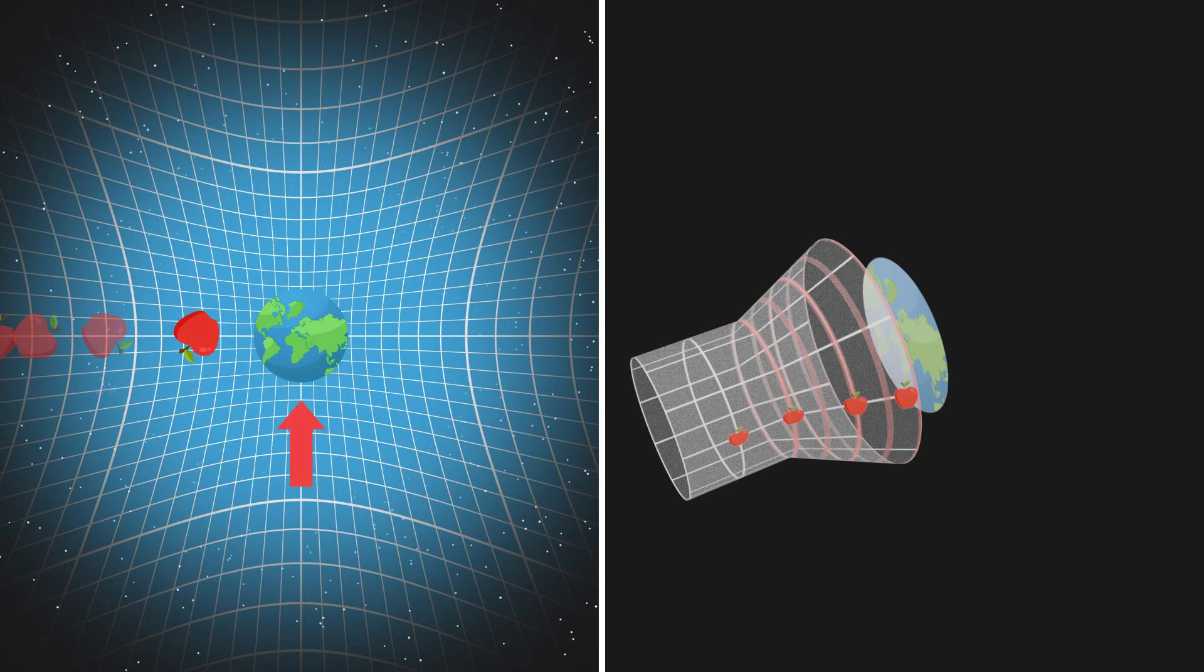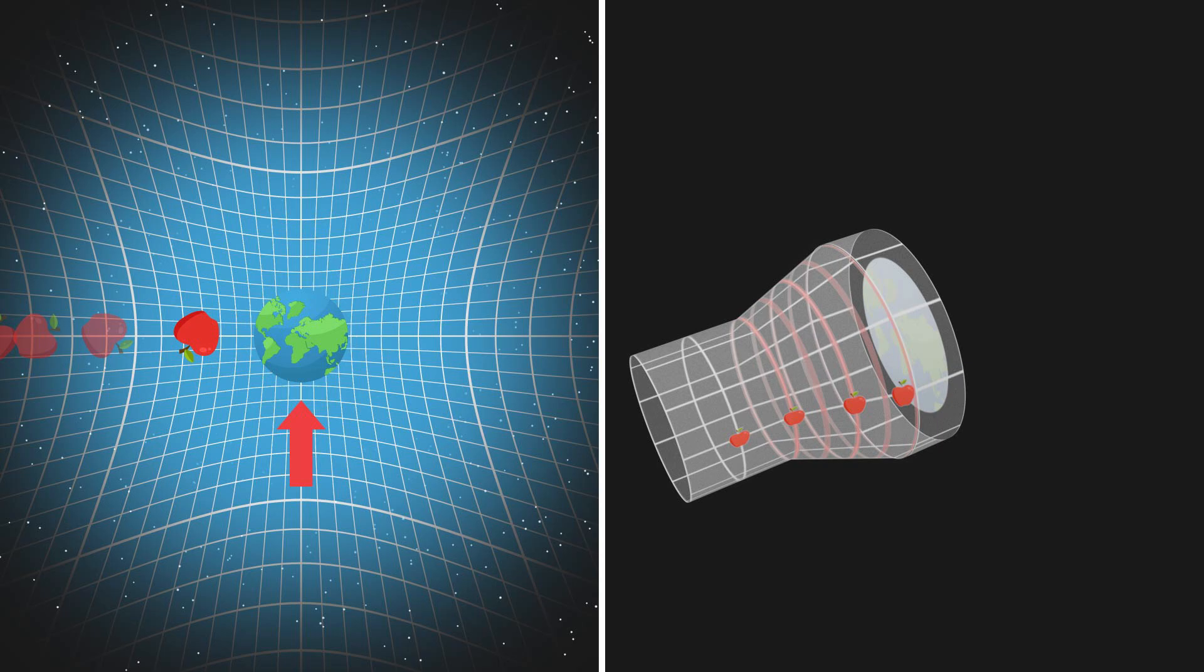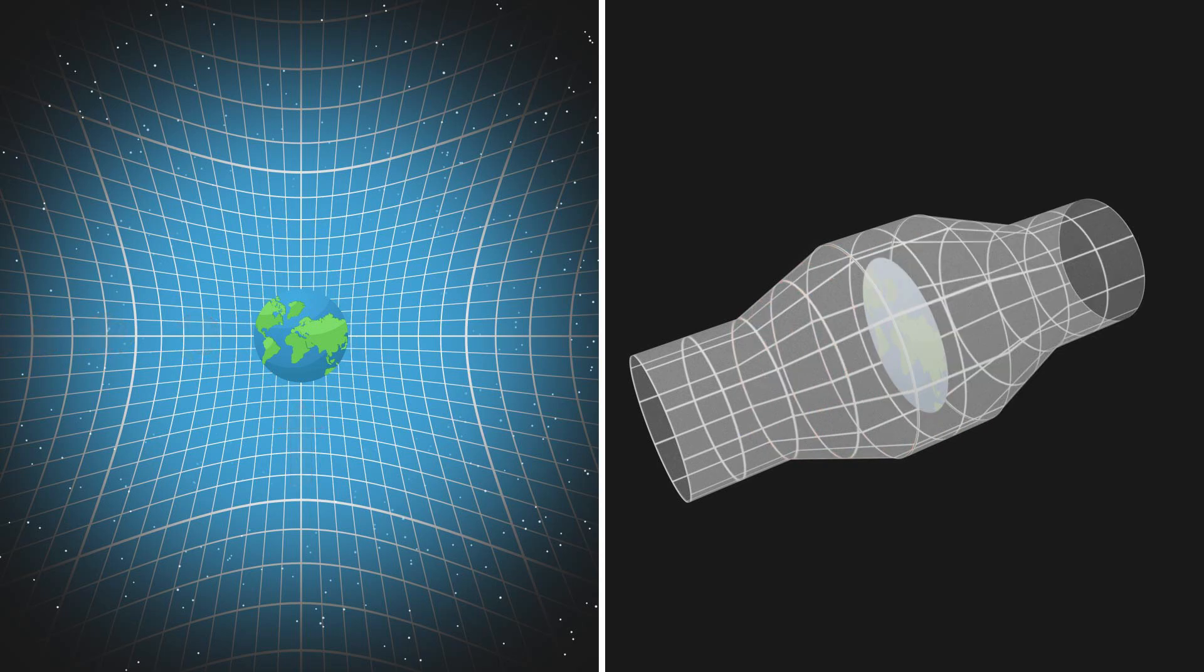However, at Earth's center, where gravity returns to zero, spacetime reverts to a cylindrical structure. This pattern is mirrored on the opposite end of the gravitational well. The spacetime for this one-dimensional space can be visualized as a series of connected cylinders and cones.